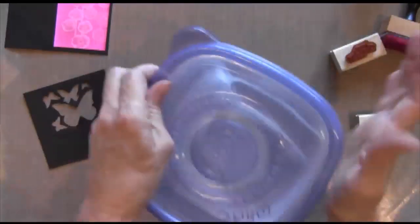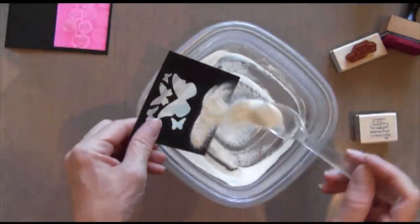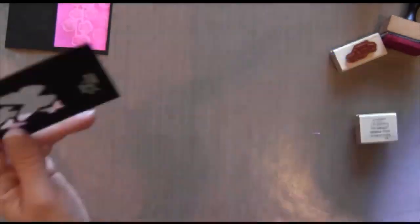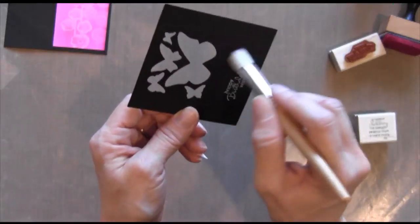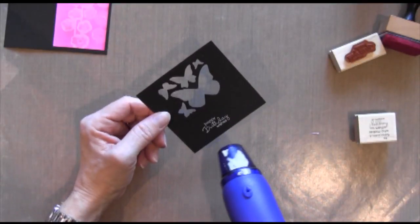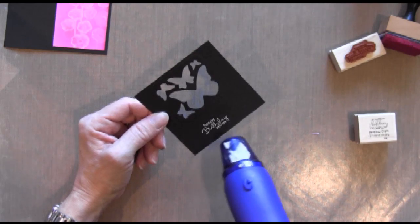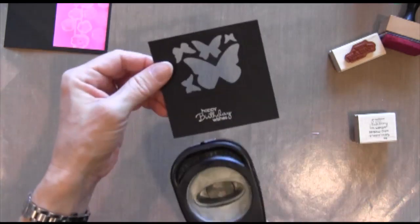I've also got this stamp set called Petite Pairs with a bunch of different pairs—a sentiment for the outside of the card and a sentiment for the inside. So I'm white embossing. As you can see, I've got this stipple brush that I use to wipe off any stray embossing powder.